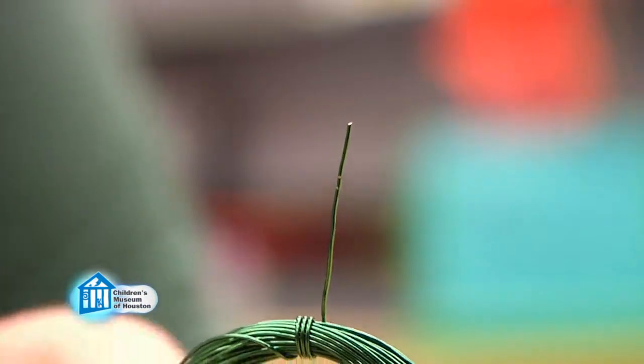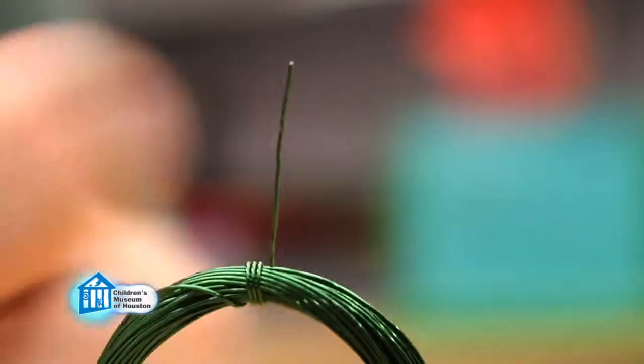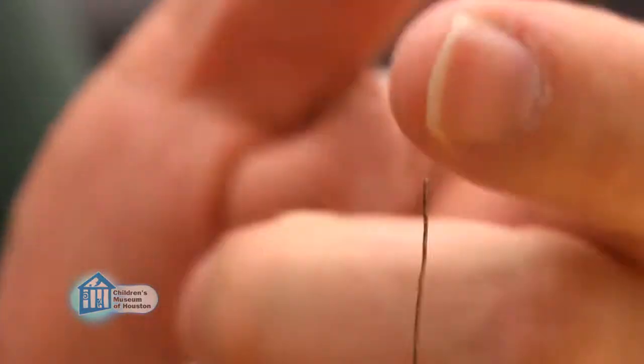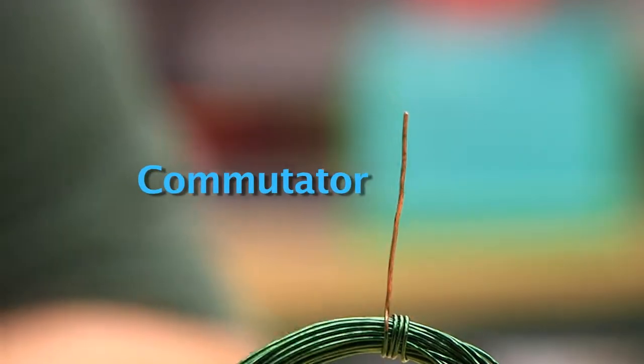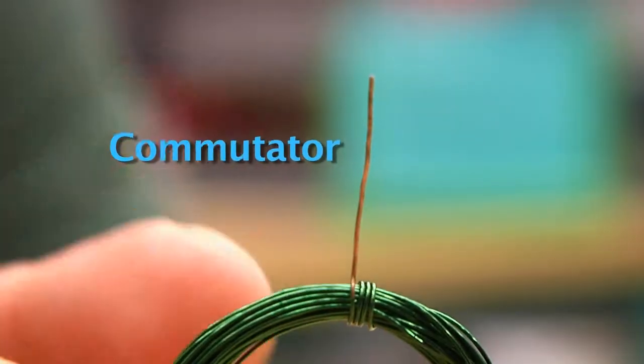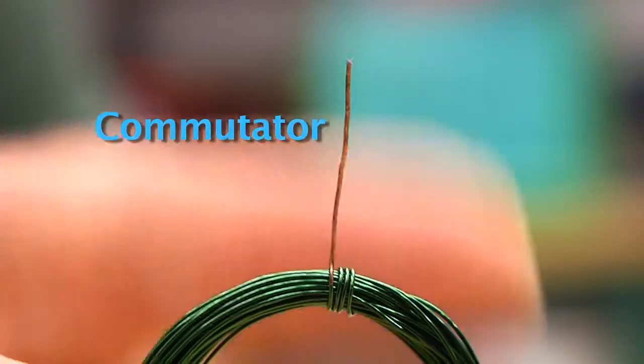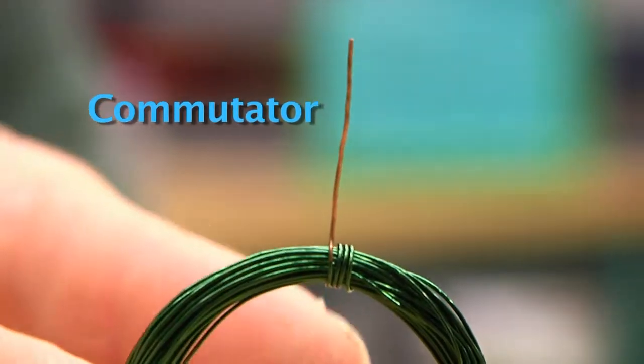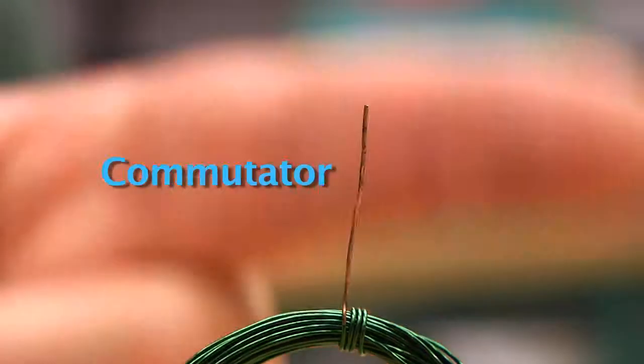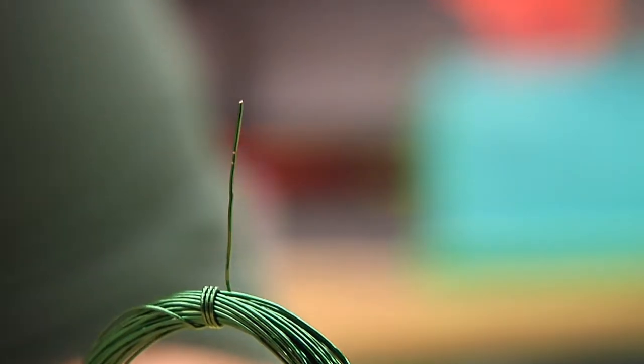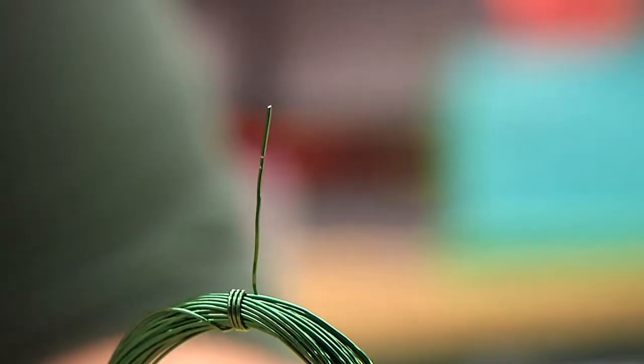The key to it working is this wire here, the one with only one side of the enamel removed. This acts as a switch. In a real motor, this part is called a commutator. If the coil kept its magnetic field constantly, it would just be attracted to the magnet and not spin. But the commutator on our motor constantly turns the electric circuit on and off as it spins, causing the magnetic field to stop and start. This means the coil is never permanently attracted to the magnet, so it can keep spinning.